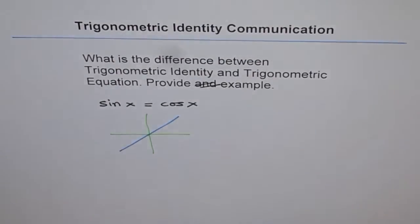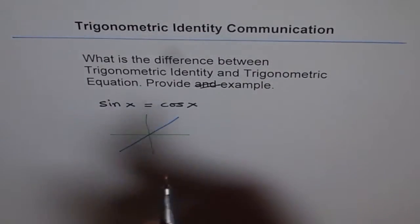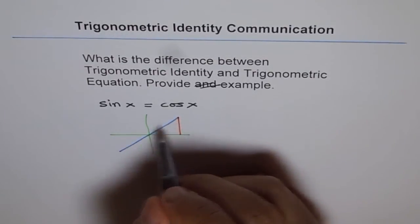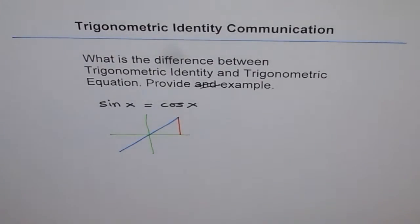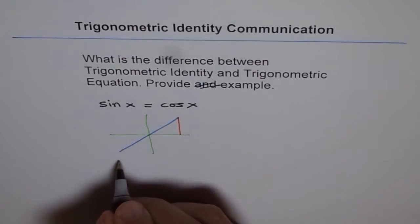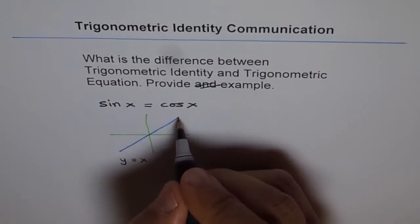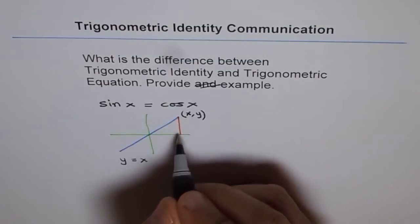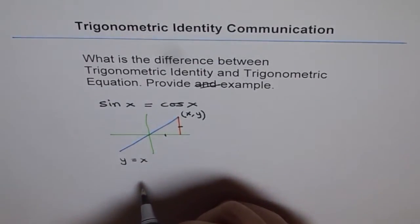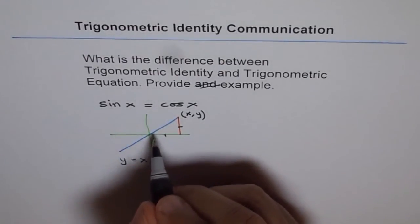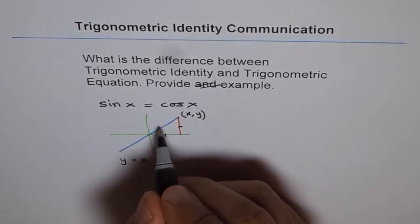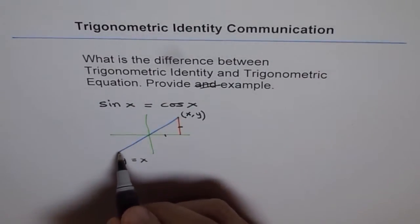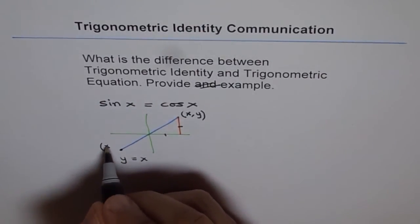Let me draw a line like this: x equals y. If I draw a line where the x value and the y value are the same, then sin x equals cos x. So if I have a line y equals x, then any coordinate on this line will be (x, x), and if y equals x then these two sides will be equal. Now sin x is opposite over hypotenuse and cos x is adjacent over hypotenuse. For them to be equal, these two sides should be equal, meaning any point on the line should be like (x, x).